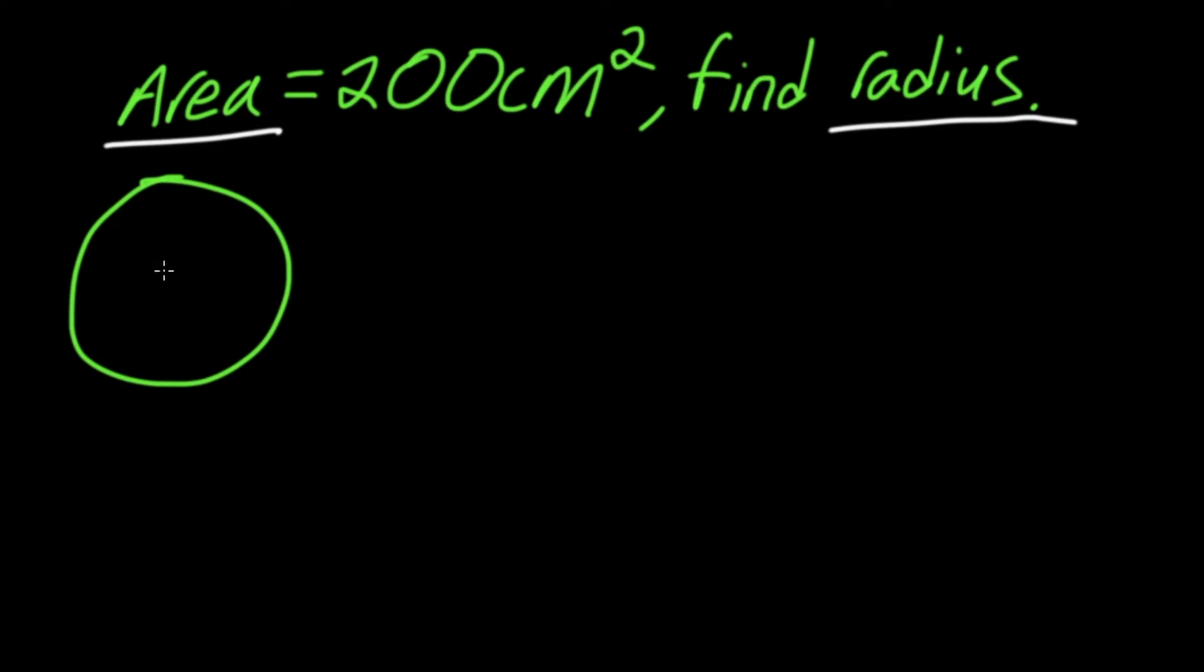If you remember, the radius is the distance from the center of the circle to an edge, so that length there. To do this, remember that the formula for the area of a circle is A = πr².